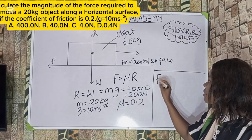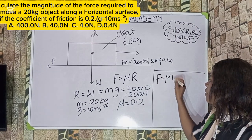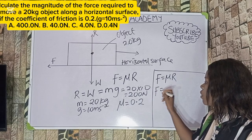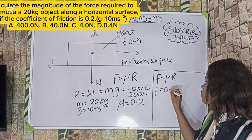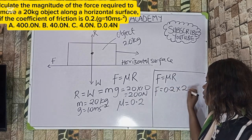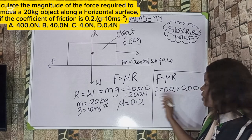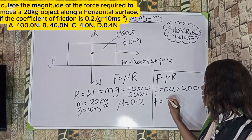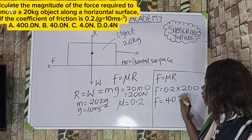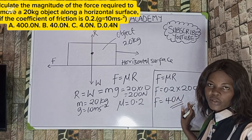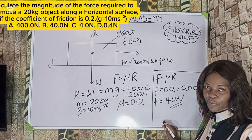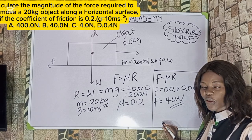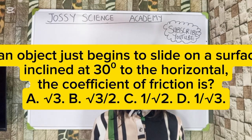Applying the formula F = μR: F equals 0.2 multiplied by 200, which gives 40 N. The correct option to this question is Option B.